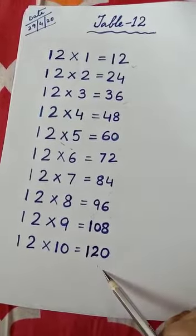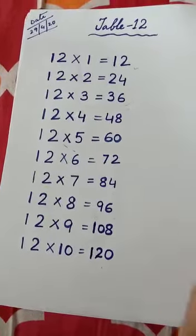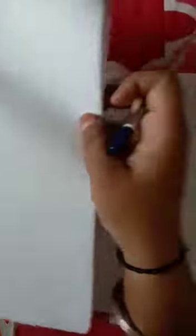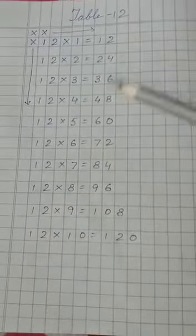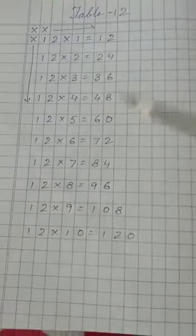So children, table of 12. You write it down in your maths copy. Here you see how I have written it. Write it down in your copy and learn the table also.